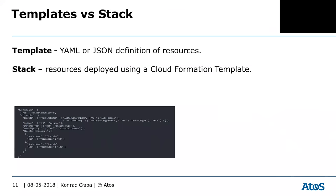The two major components are templates and stacks. A template is the text file — either YAML or JSON format — that is the definition of your resources. Here you can see a simple template for an EC2 instance. The stack represents the actual resources that you have deployed with the template.